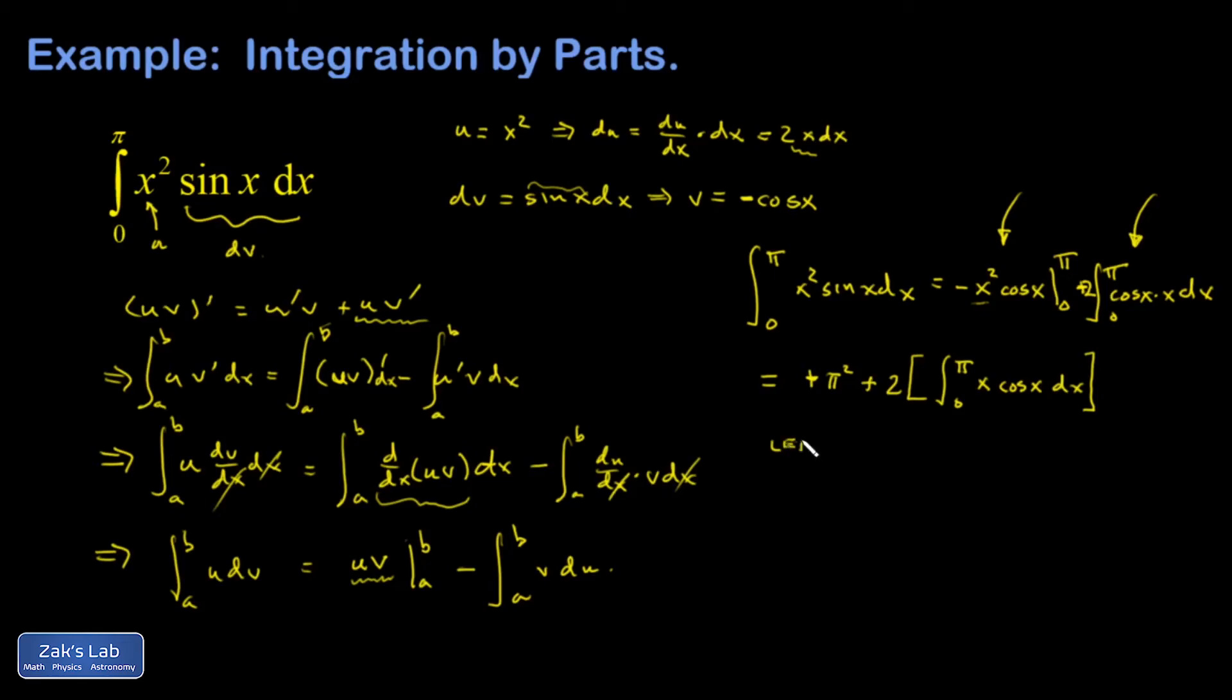I'm going to let u equal x. du is dx. Let dv equal cosine x dx. v must be sine x. And apply integration by parts. That pi squared is still hanging out. All right. So I end up with uv, so that's x sine x, evaluated across the endpoints, 0 to pi, minus the integral of v du. v is sine x, du is dx.